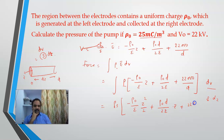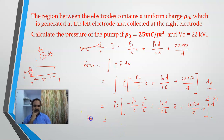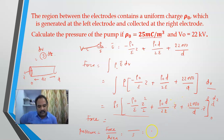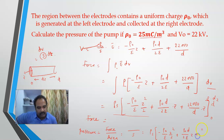After integrating from z equals 0 to d, I obtain the force expression. For pressure, pressure equals force over area S. Dividing by S cancels it out. The resulting expression is pressure equals rho naught times the integral evaluated from 0 to d, giving terms involving minus rho naught over epsilon times z squared over 2 plus rho naught d over 2 epsilon times z plus 22000 over d times z.